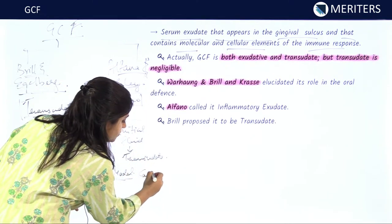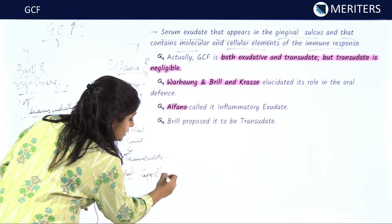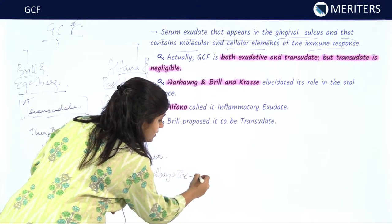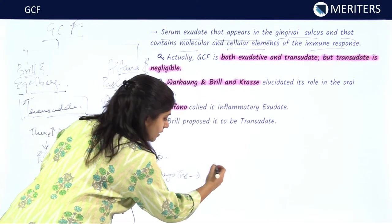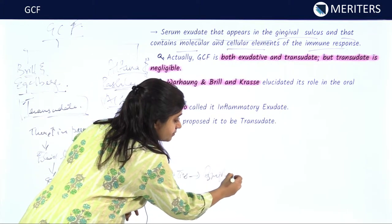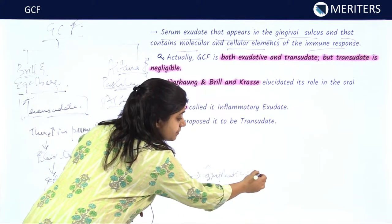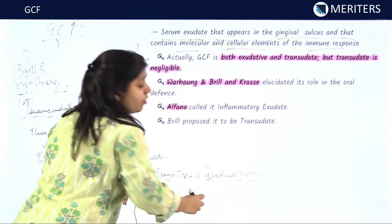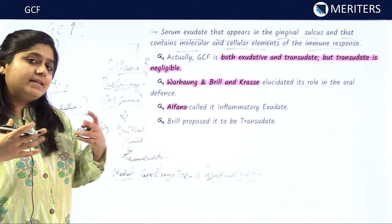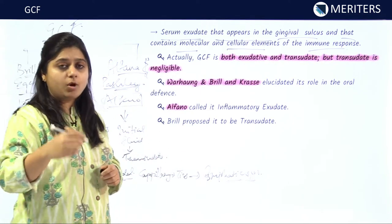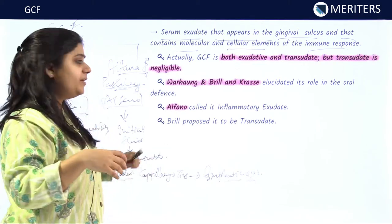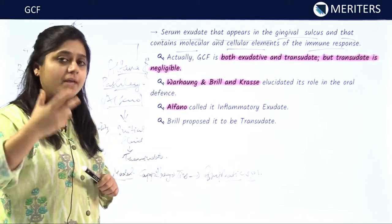According to Paschle's model, fluid comes from capillaries to tissues, and from tissues it is drained by the lymphatic system. During inflammation, the number of capillaries increases and the amount of molecules and cells coming to the inflammatory site also increases.